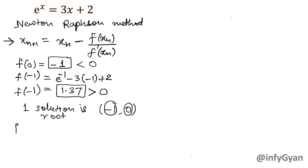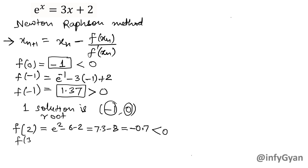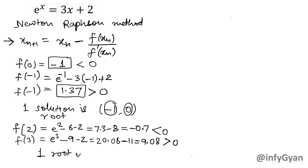Now let us find out a few more values. f(2) will be e raised to the power 2 minus 3 times 2 minus 2. e squared is 7.3, minus 6 minus 2, giving approximately negative 0.7 — this is negative. f(3) is e cubed minus 9 minus 2. e cubed is 20.08, minus 11, giving approximately 9.08 — which is positive. f(2) is negative and f(3) is positive, meaning one root is in between 2 and 3.